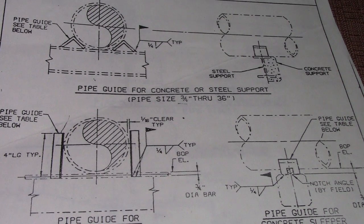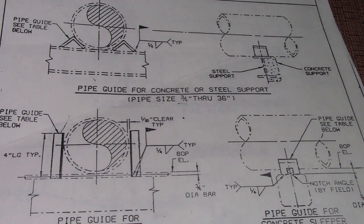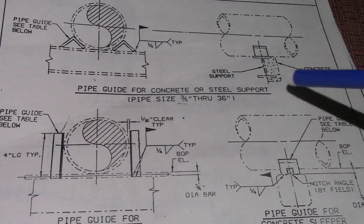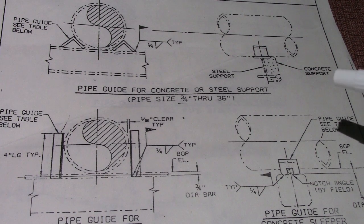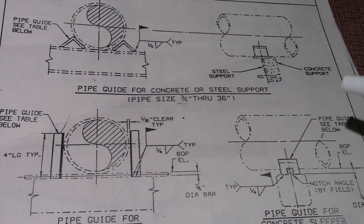Hi guys, welcome back to Piping Welding and NDT channel. This is an example of support details. On this support details they have dimension symbols, size of support, and name. This type of support includes shoes, guides, and anchors.